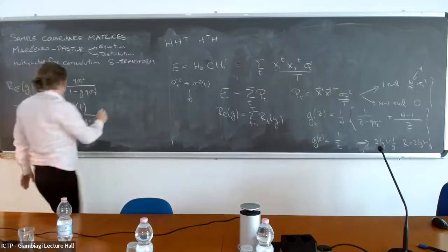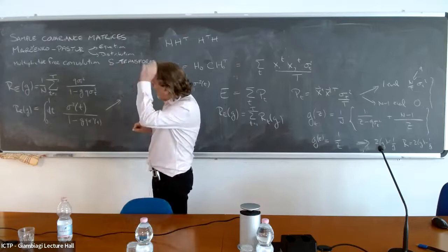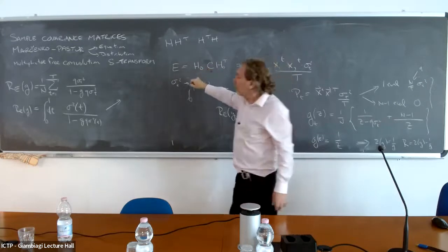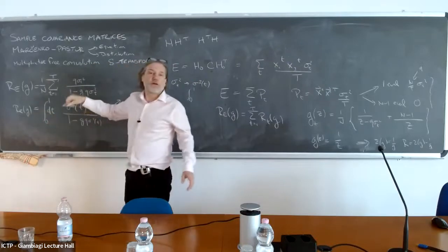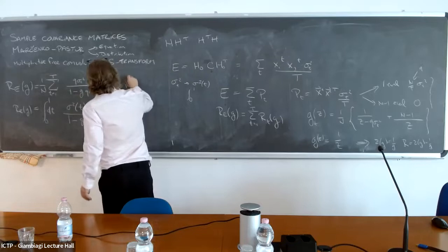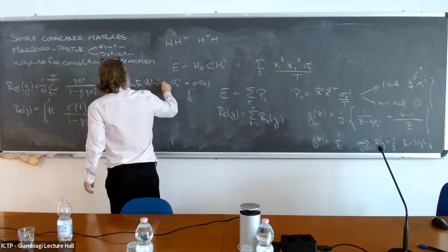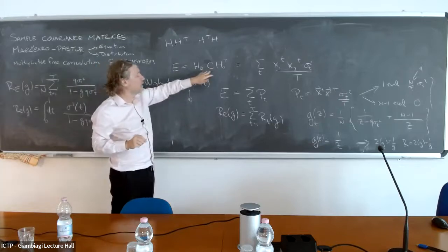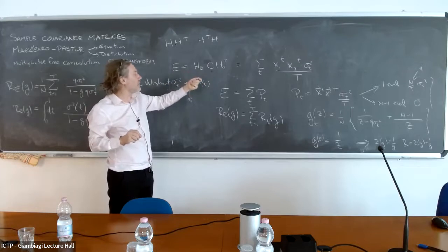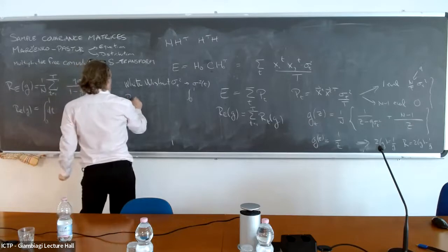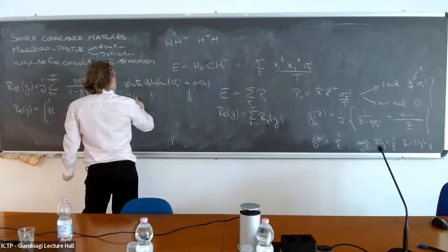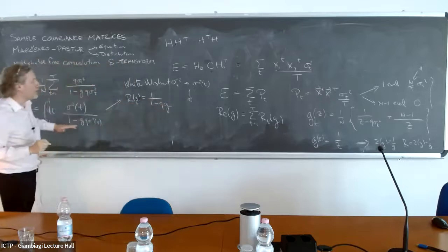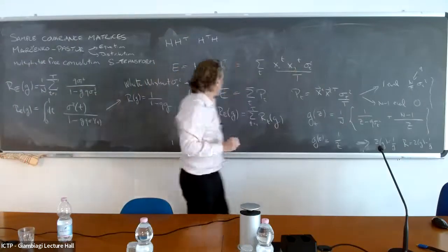Two things jump out. First, if C is the identity matrix, all sigma^2 values equal 1. The integral simplifies tremendously. This is called the white Wishart case. The sample covariance matrix is a Wishart matrix. Wishart considered the case with matrix C; if the true covariance is the identity, I call that a white Wishart. Then the R-transform is: R(G) = 1 / (1 - Q G). That's one result. It's equivalent to doing the computation without the sigma^2 terms.